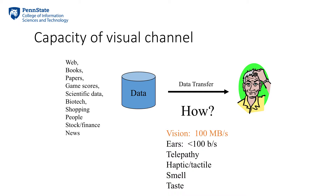For example, we can only read or hear at limited rates. The visual system can take input in parallel at about 100 million bits per second, compared to other systems which take input at about 100 bits per second. That's a significant difference.